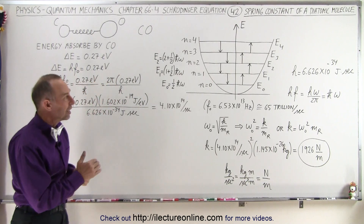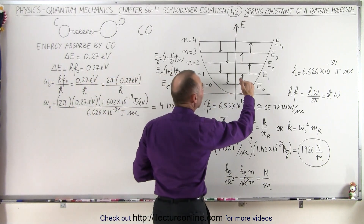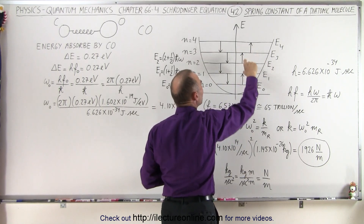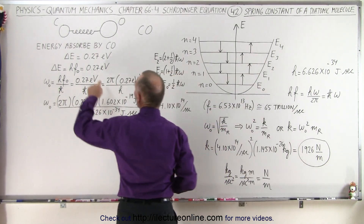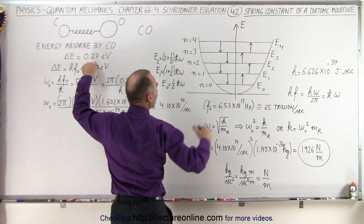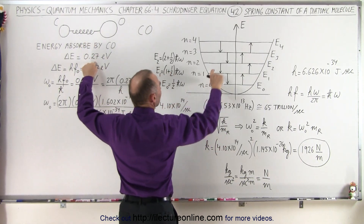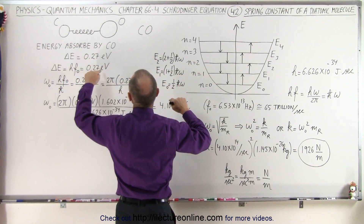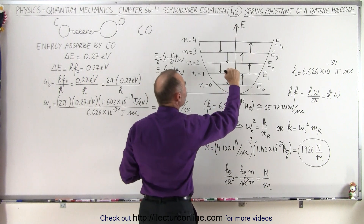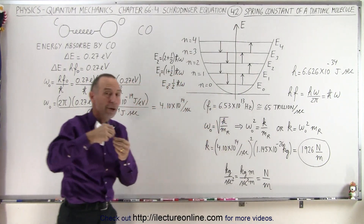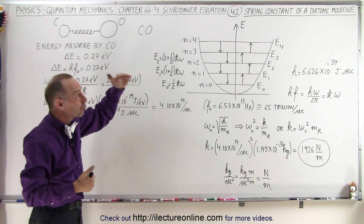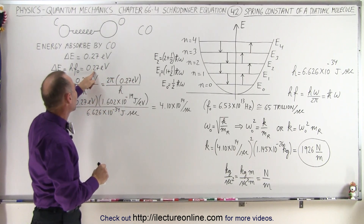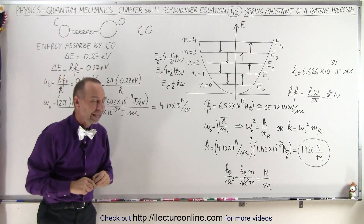As that molecule absorbs energy, it keeps jumping up energy levels. Each delta energy from one level to the next means the molecule absorbed that much energy. The difference in energy is h-bar times omega, which equals 0.27 electron volts as it jumps from one level to another. When the molecule emits that amount of energy, it drops one energy level at a time, each time emitting a photon of that particular energy.